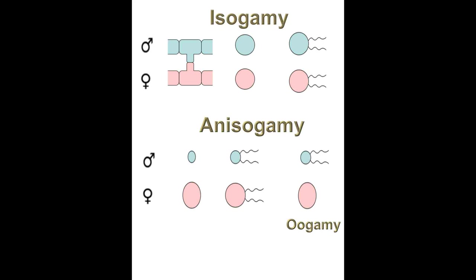In isogamous species, the gametes are of similar size and morphology. However, in anisogamous species, gametes are different in size or morphology or both. We are a special type of anisogamous called oogamous, where our gametes are different in both size and morphology. Because this video is in the zoology playlist, we will focus specifically on overall embryonic development in animals. Plant and fungal development won't be treated here, though they are fascinating too.